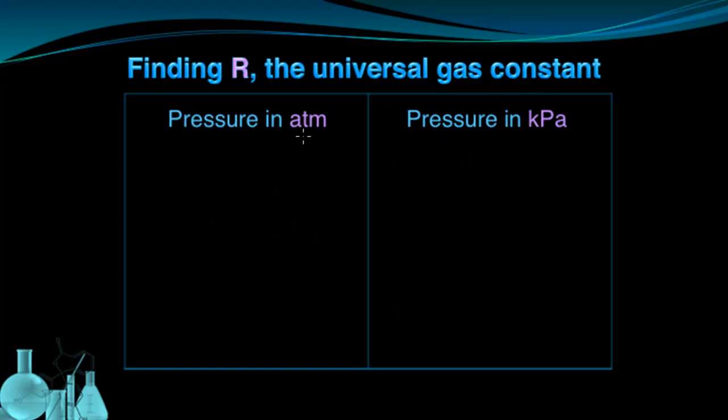Here we have two cases. In the first case, we're going to find R when pressure is measured in atmospheres. In the second case, we'll look at the R constant when pressure is measured in kilopascals. Before we begin, we're going to do a little bit of algebra. Here we have our ideal gas law, PV equals nRT. We're going to write this in terms of R. So R is equal to PV divided by nT.